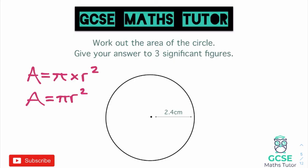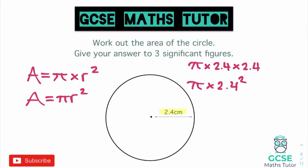To work out the area, identify the radius first. This question gives the radius as 2.4 centimetres. We're going to do pi times 2.4 squared. If you don't have a squared button, you can write this as pi times 2.4 times 2.4. Pressing shift to get pi, then times 2.4 squared, pressing equals and converting back to a decimal gives 18.09557368.